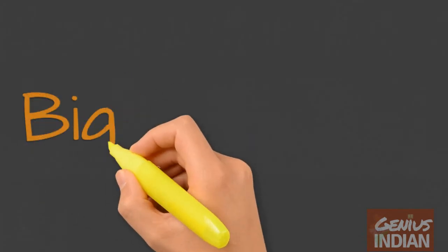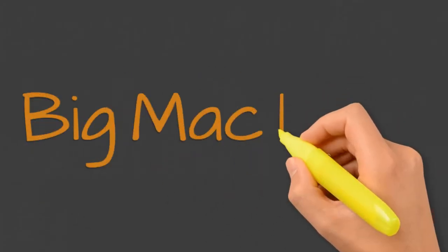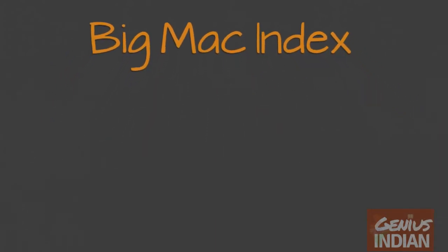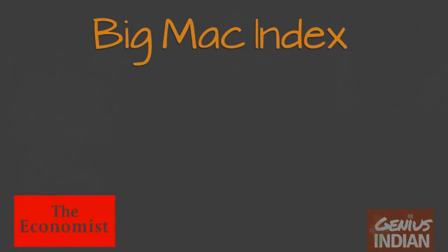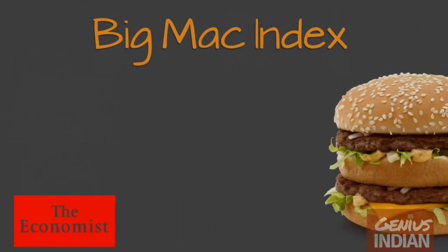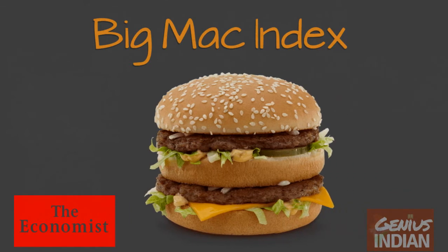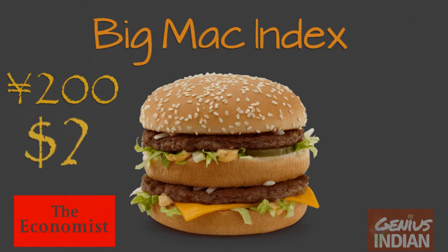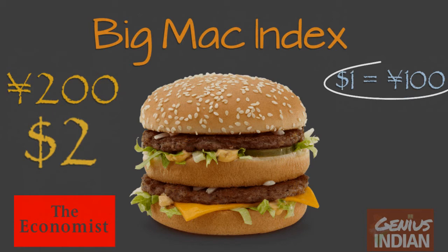The most popular instrument for calculating PPP is the Big Mac Index. It was devised by the popular news magazine The Economist, and it calculates how many units of a local currency are needed to purchase a Big Mac in two different countries to arrive at the relative exchange rate and the relative purchasing power. For example, if a Big Mac costs 200 Japanese yen in Tokyo and 2 US dollars in New York, then these two prices would provide an exchange rate of 1 dollar equaling 100 yen.